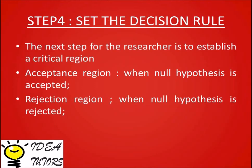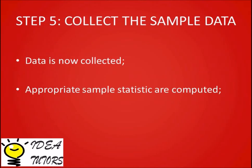Step 4: Set the decision rule. The researcher establishes a critical region and an acceptance region. The acceptance region is where the null hypothesis is accepted, and the rejection region is where the null hypothesis is rejected. Step 5: Collect the sample data. Data is now collected and the appropriate sample statistics are computed.